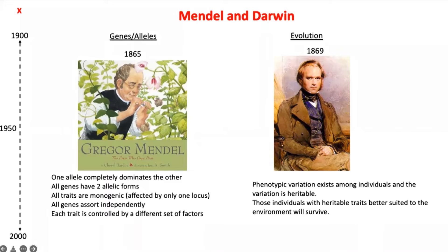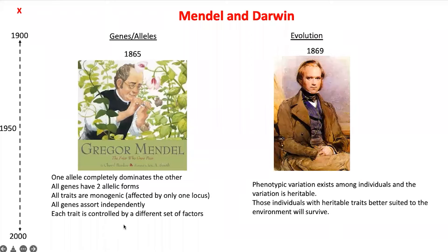Many of you are aware of this from your school days: there is the principle of dominance, there is segregation, and there is independent assortment. All traits are monogenic — they are affected only by one locus — and each trait is controlled by a different set of factors. I have basically framed all of this in the light of what we know in modern biology and modern genetics.